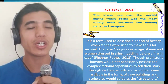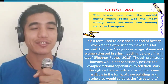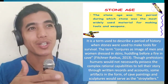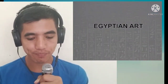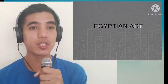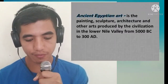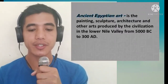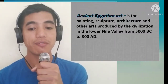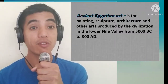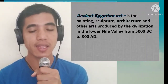After the Stone Age, we're going to focus on Egyptian art. Ancient Egyptian art includes painting, sculpture, architecture, and other arts produced by the civilization in the lower Nile Valley, from 5,000 BC to 300 AD.